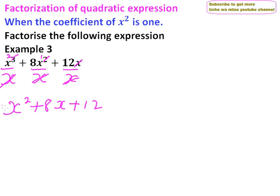The coefficient of x squared is 1 here, although we don't write it. To factorize and introduce the brackets, we look for two numbers a and b such that when we add a plus b, they give the coefficient of x, which is 8. When we multiply a times b, they should give the constant, which is 12.